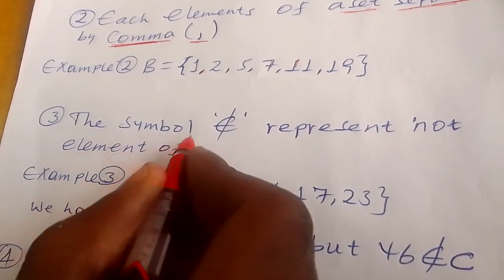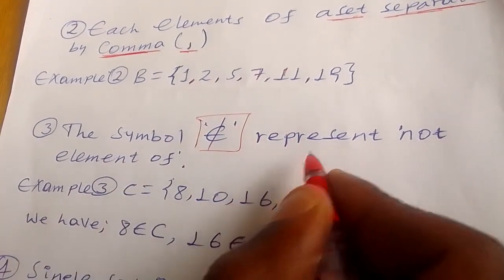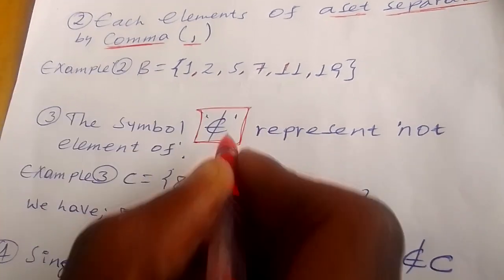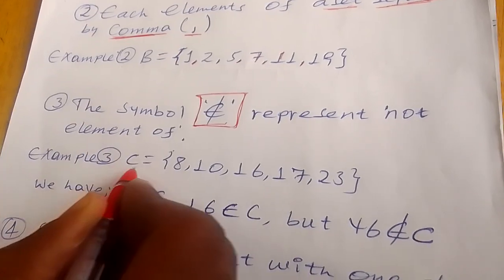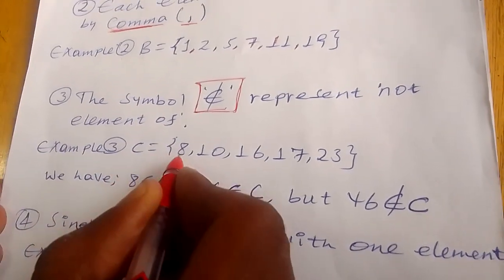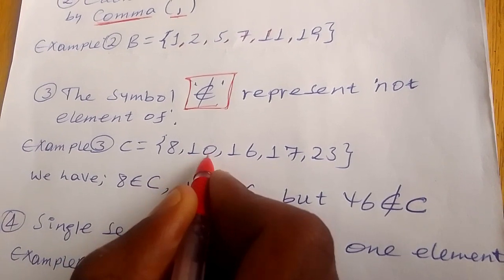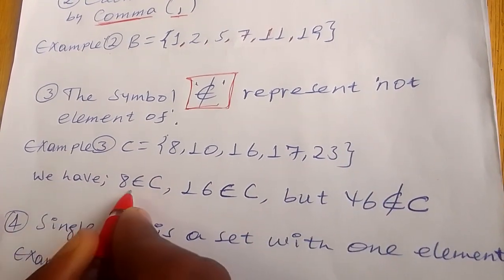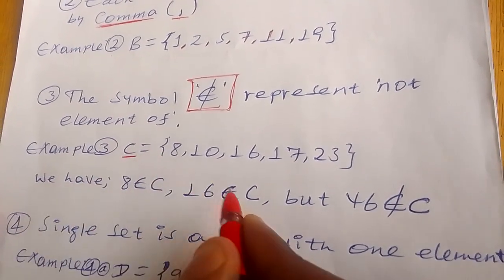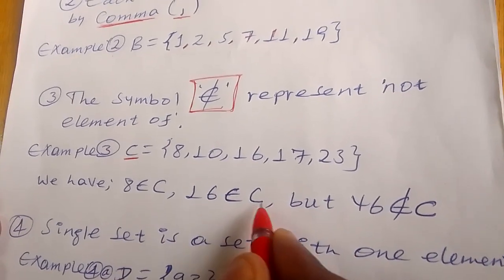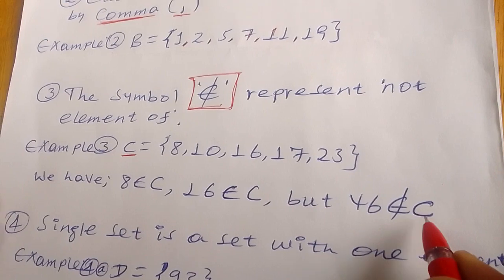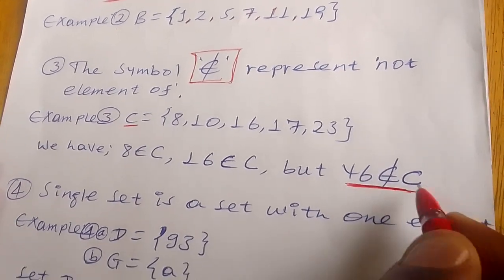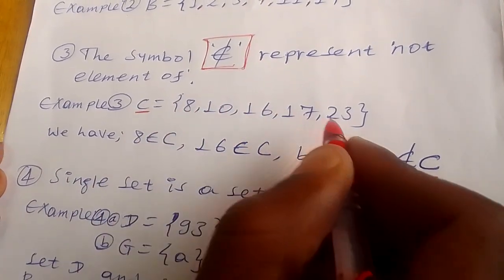The third note: this symbol represents 'not element of.' For example, set C is equal to {8, 10, 16, 17, 23}. We have: 8 is an element of set C, and 16 is an element of set C, but 46 is not an element of C. You can write: 46 ∉ C, because 46 is not contained in set C.